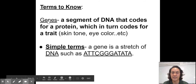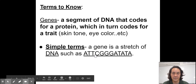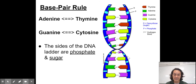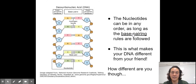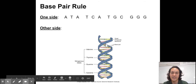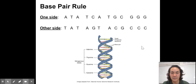A gene is a segment of DNA that codes for a protein — this is why we teach DNA and genetics together. The sides of the DNA ladder are the phosphate and the sugar; the inside is the base. The nucleotides can be in any order as long as base pairing rules are followed, which is what makes you different from your friends, while you're still very similar. Can you say what the other side of DNA is? Check those base pairing rules — notice how I've set them up in groups of three, which will be important later when we read DNA and make codons and anticodons.